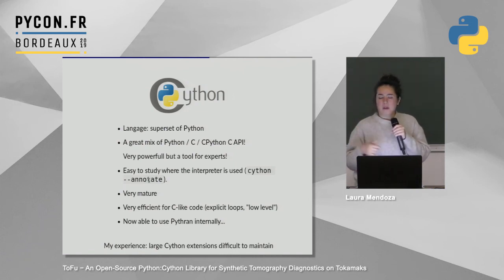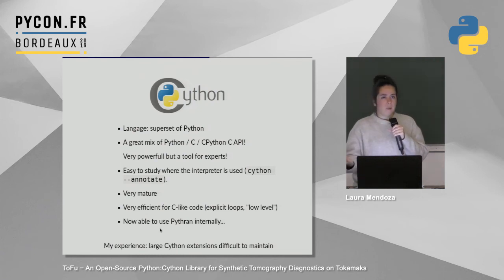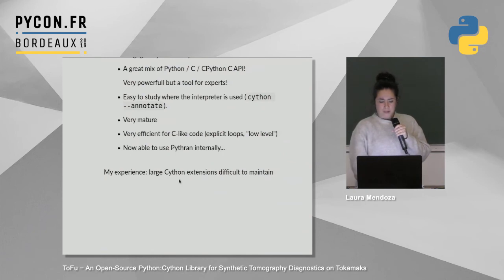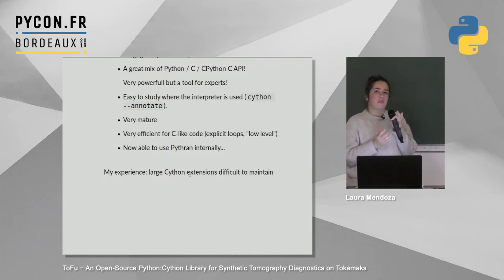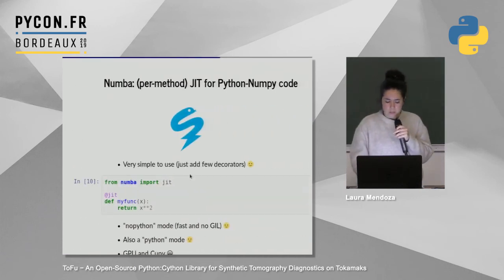Let's compare these libraries. Cython is a great mix of Python, C, C++, and CPython API. It's very powerful, one of the most known and used ways of optimizing Python code. There are many tools to see where it's taking more time to compile. It's very mature with lots of users and developers, well maintained, really portable, and nearly as efficient as C. Now it can also use OpenMP. However, large Cython extensions are difficult to maintain because you end up using pointers, mallocs, and low-level C/C++ utilities — the code becomes less readable and fewer people can contribute to your package.